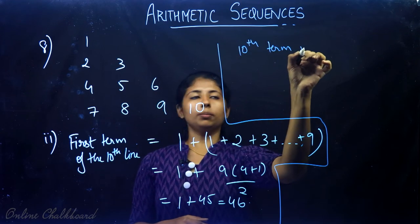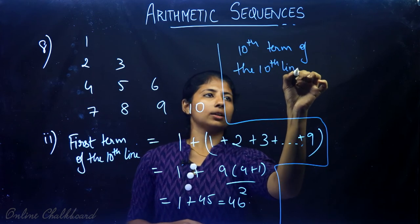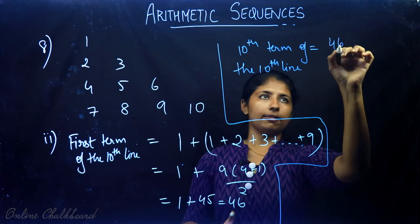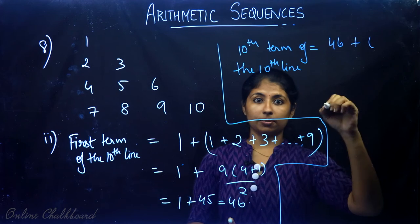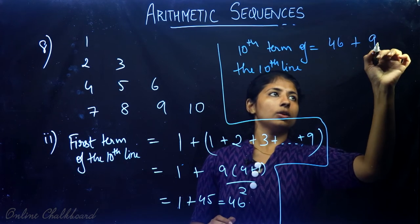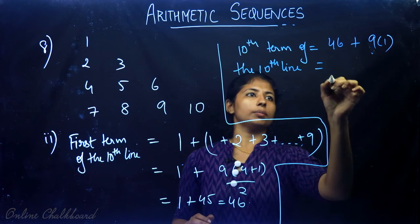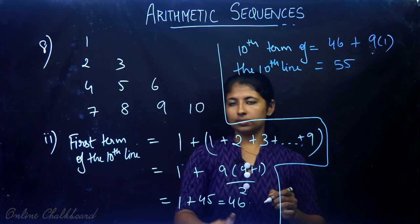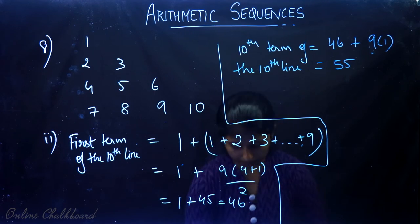The 10th term (last term) of the tenth line equals first term plus (n minus 1) times common difference, that is 46 plus (10 minus 1) times 1 equals 46 plus 9 equals 55. So the first and last terms of the tenth line are 46 and 55.